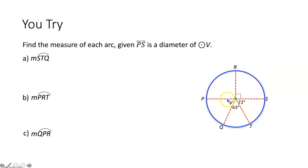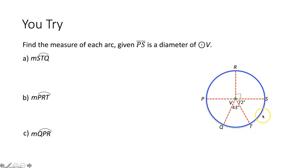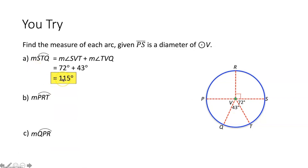Now doing the same thing, except this time with circle V and diameter segment PS. The first thing to find is the measure of arc STQ, which is a minor arc because its measure is less than 180 degrees. The measure of an arc is found by adding together the measures of the central angles that make up that arc. Arc STQ is made up of angle SVT and angle TVQ. Adding those central angle measures together, the measure of arc STQ is 115 degrees.